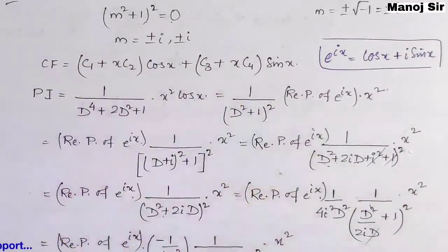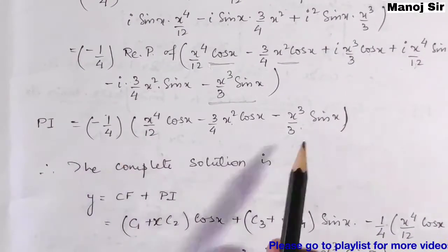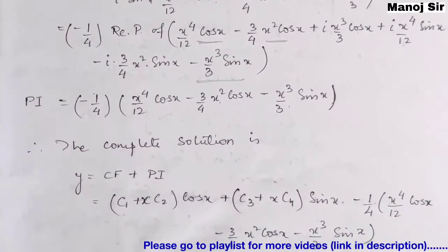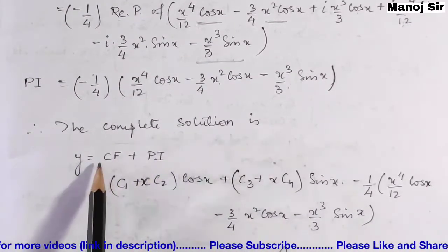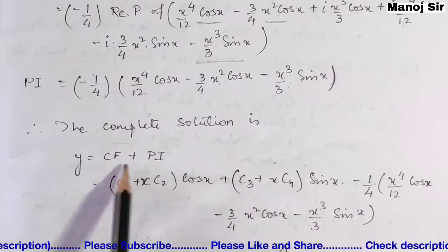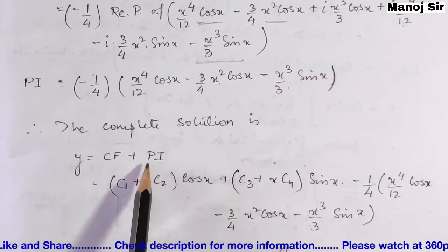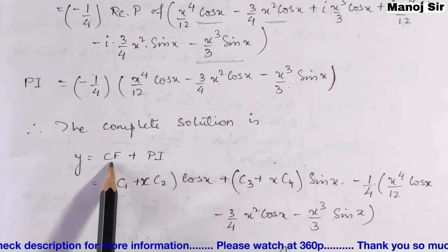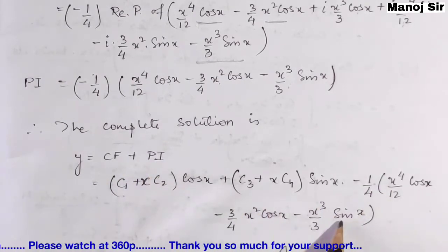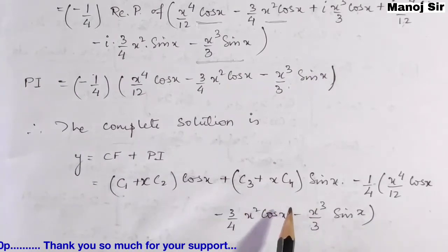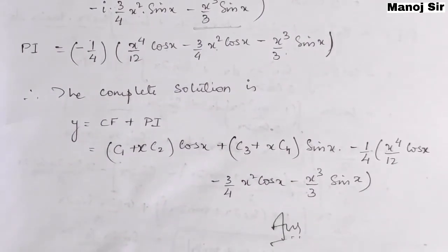So the complete solution is y = CF + PI, where CF = (c₁ + xc₂)cos x + (c₃ + xc₄)sin x and PI = −(1/4)[x⁴cos x/12 − (3/4)x²cos x − (x³/3)sin x]. Combining CF and PI gives the final answer. Thank you.